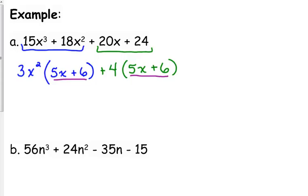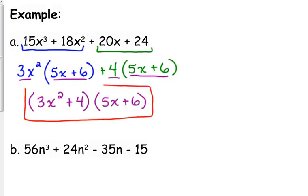If those are not the same, then you've either done something wrong or it can't be factored this way. So after that point, what we do is we take our two GCFs and they get put in a set of parentheses together. 3x squared plus 4. And then we list our common factor only once. 5x plus 6. Only once. That is how that expression factors.